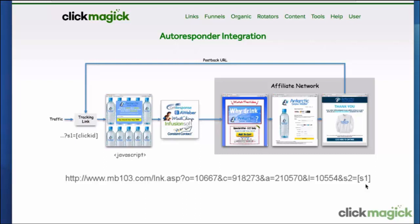Now comes the exciting part — figuring out exactly how to get your autoresponder to do that. Every autoresponder handles this differently, but I'm going to give you some hard-earned pointers to get you started, and I'll show you a couple of examples using the popular AWeber and GetResponse autoresponders. Normally when you're creating an opt-in page, you'll first create the email opt-in form in your autoresponder, then copy the form and paste it into your page builder. Most autoresponders give you the choice of copying either a piece of JavaScript code or a piece of HTML code. To pass the click ID through your opt-in page and autoresponder, you're almost certainly going to need to use the HTML version, so I'm going to suggest that you start there.